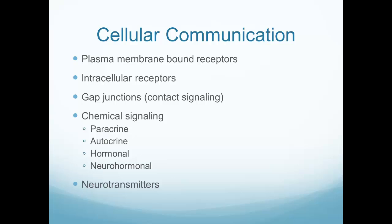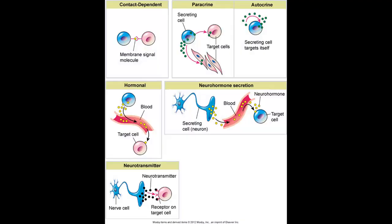There are also gap junctions on the outside of the cell between cells that have contact signaling — like two battery contacts rubbing together in a flashlight. We can have chemical signaling with a number of different methods, and we can also have neurotransmitters. Let's look at each communication type in more depth to better understand how we get communication in the body.